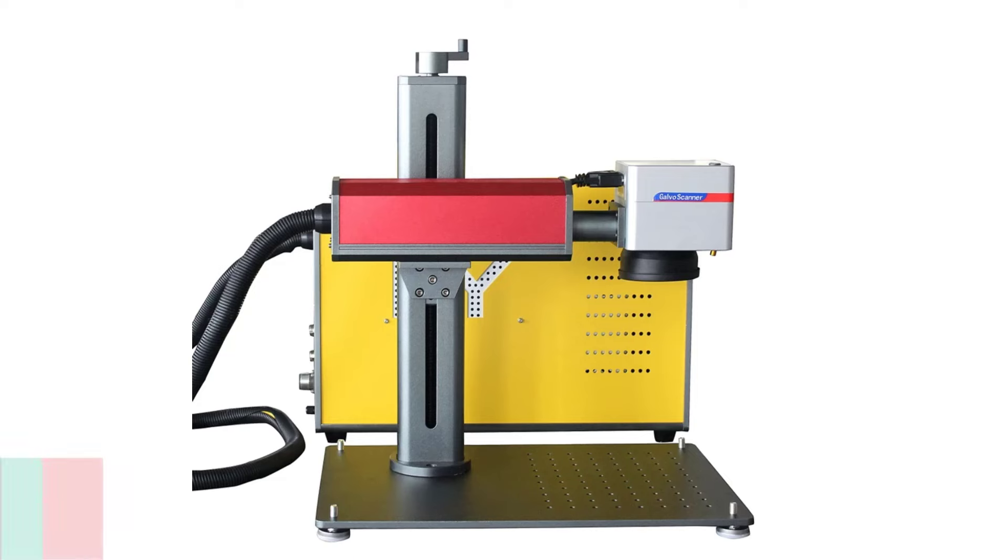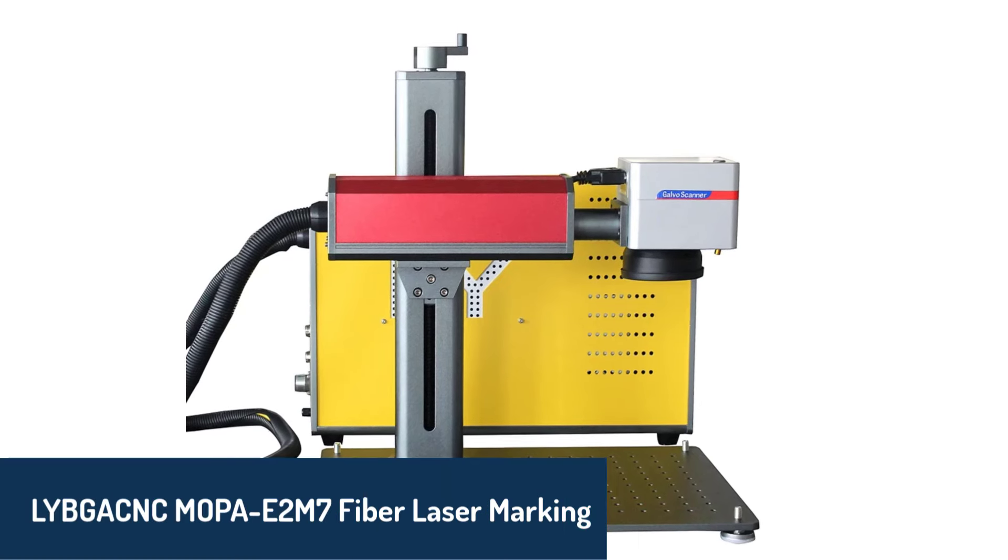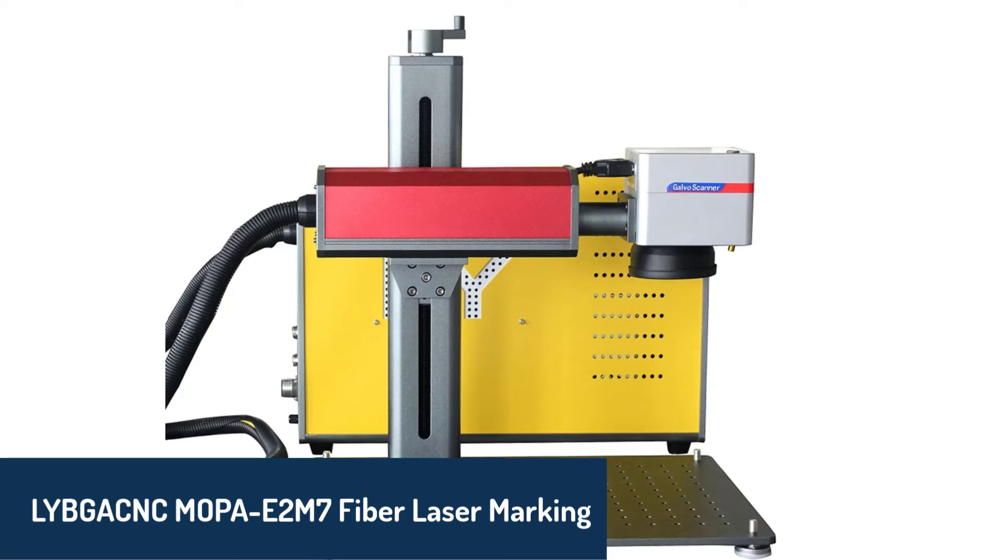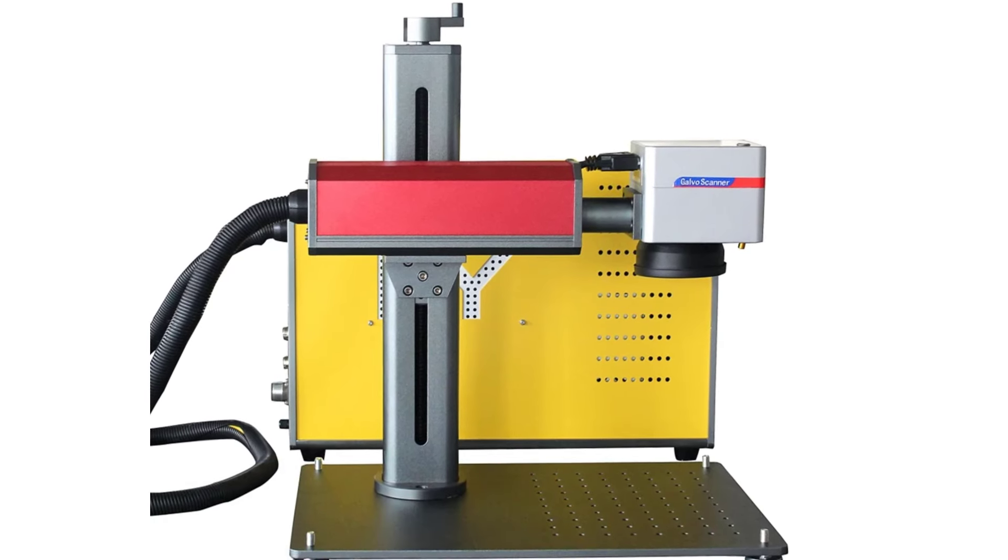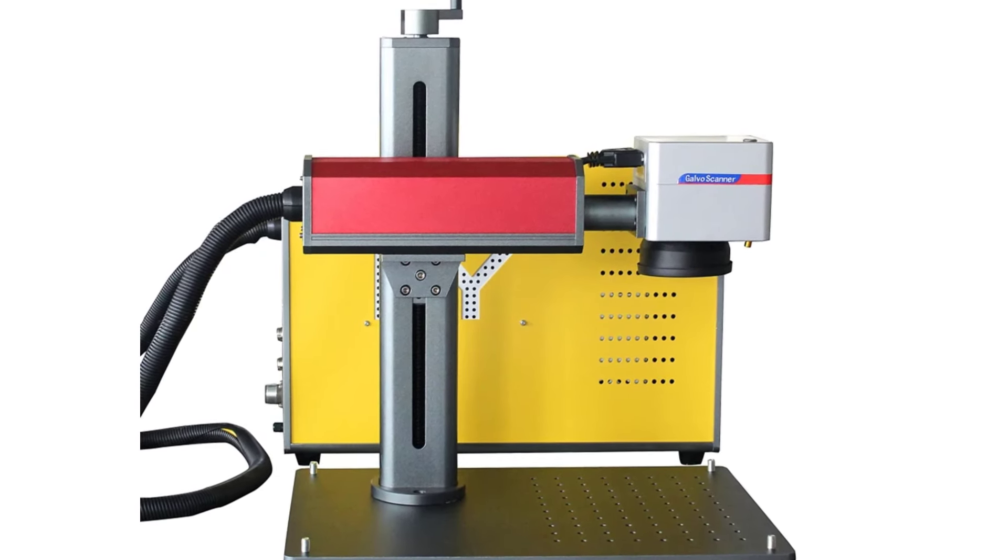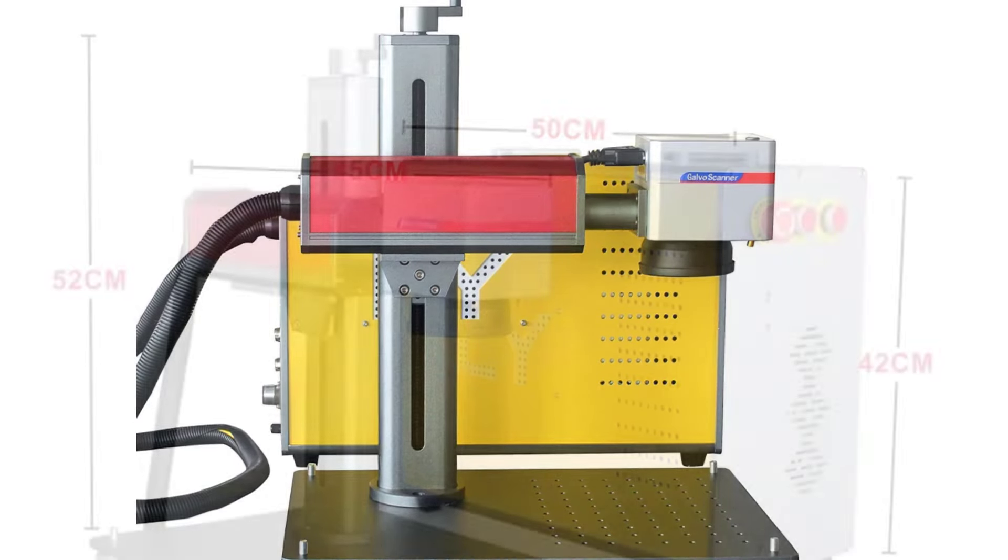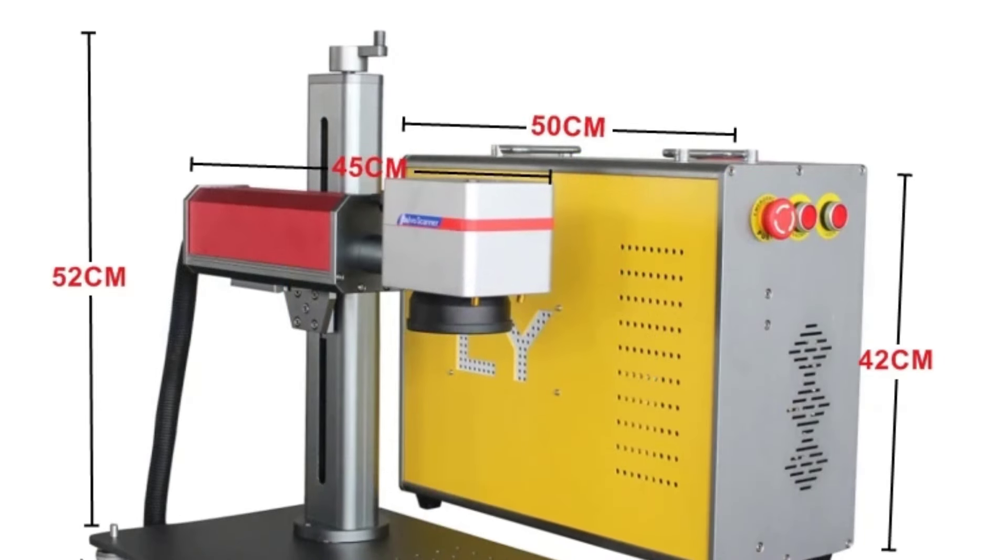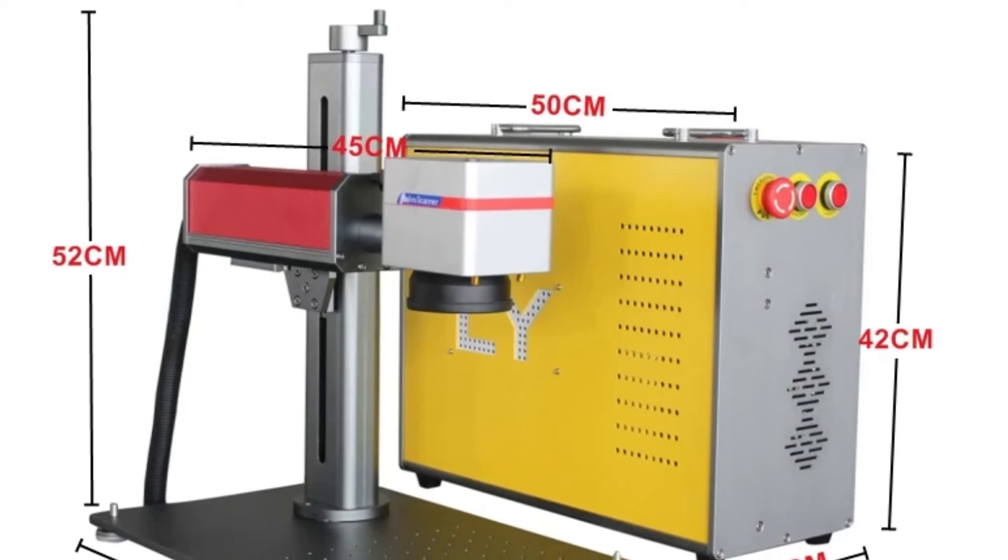Number five is the LYBNC Mopa E2M7 fiber laser marking machine, a versatile option packed with impressive features. With power options ranging from 20W to 100W and a customizable working area, this machine can handle a wide variety of tasks with precision.